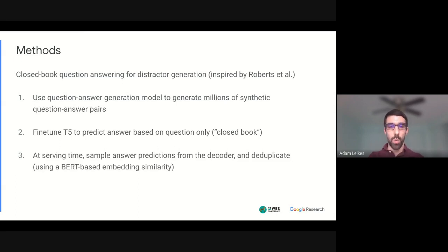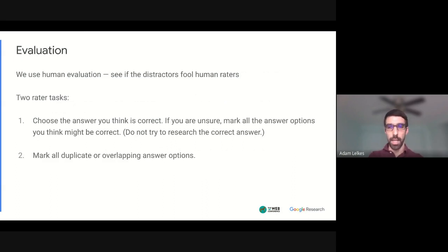And at serving time, we sample from the decoder of this sequence to sequence model to get a set of candidates. And in order to make sure that we don't end up with duplicate distractors, we use a BERT-based embedding model to choose distractors that are as far away from each other in the embedding space as possible.